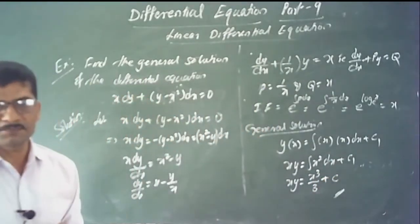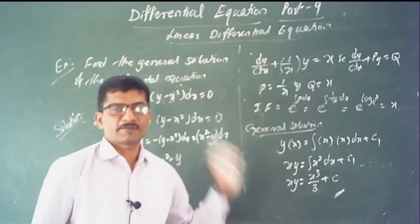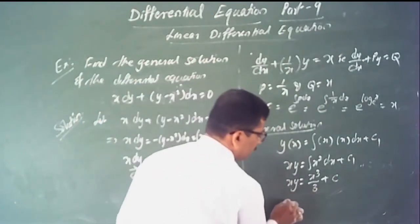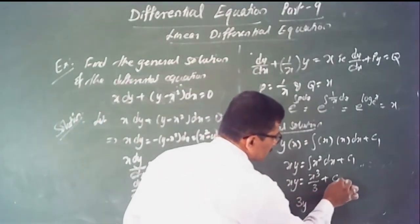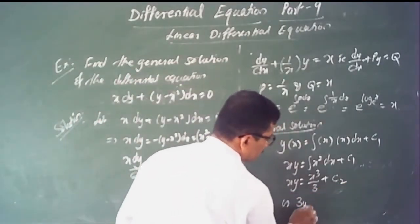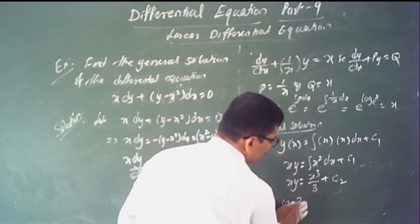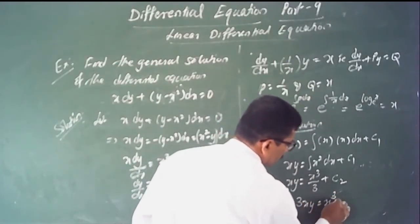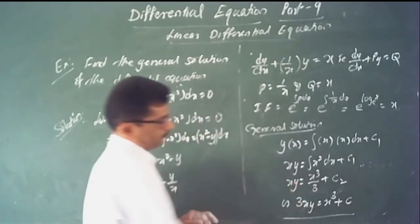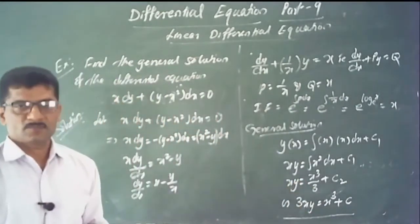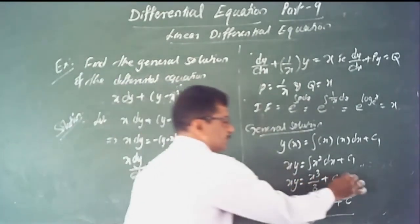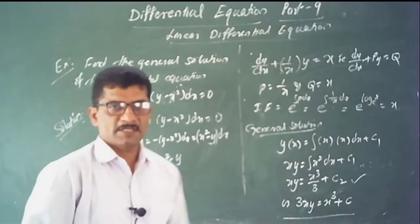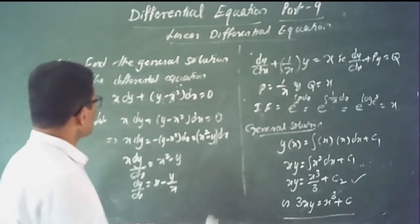This is the general solution. Simplifying by multiplying by 3: 3xy equals x cubed plus c. That is the general solution of the given differential equations.